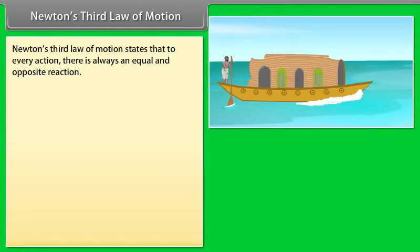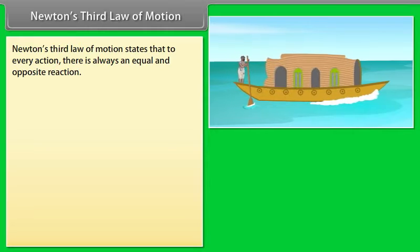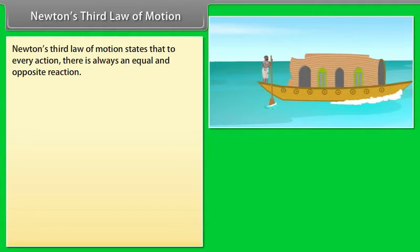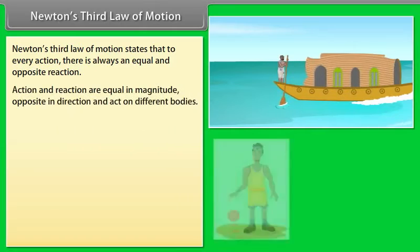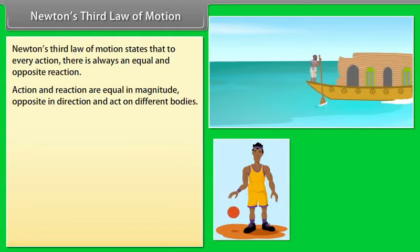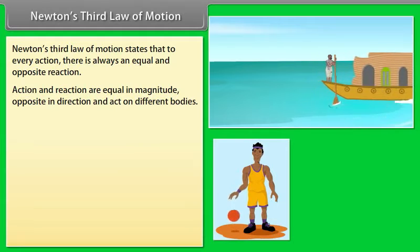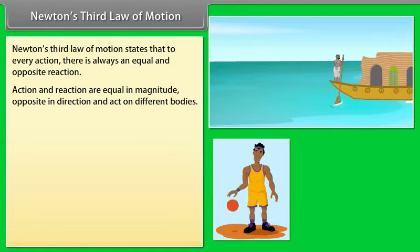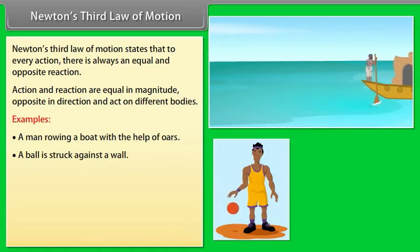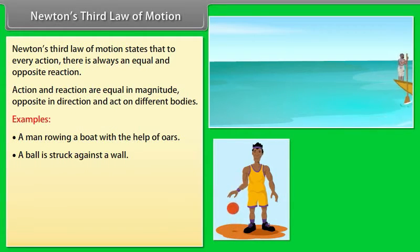Newton's Third Law of Motion states that to every action there is always an equal and opposite reaction. Action and reaction are equal in magnitude, opposite in direction, and act on different bodies. Examples include a man rowing a boat with oars, and a ball bouncing on the ground.